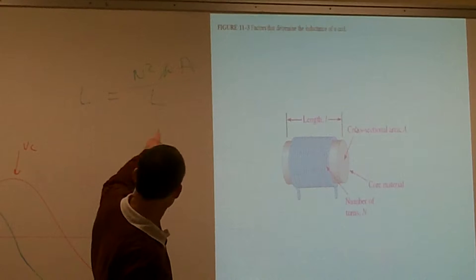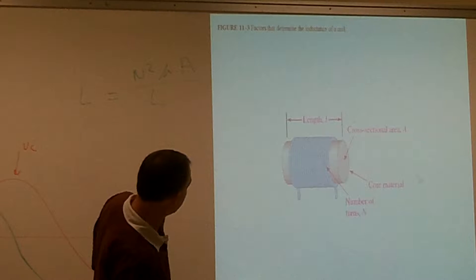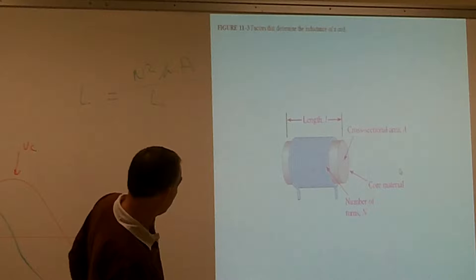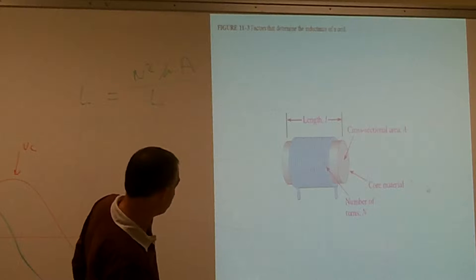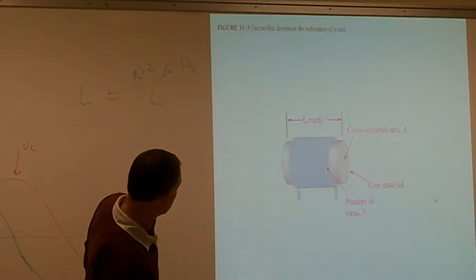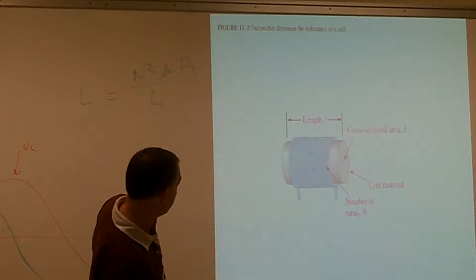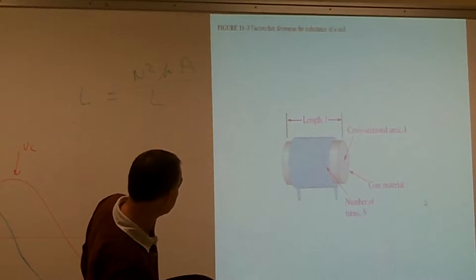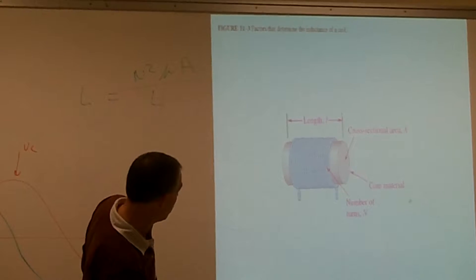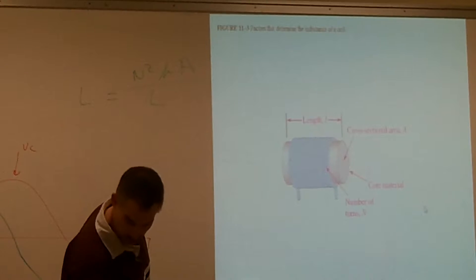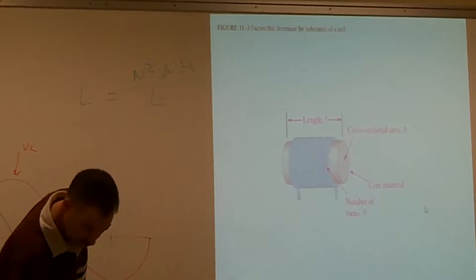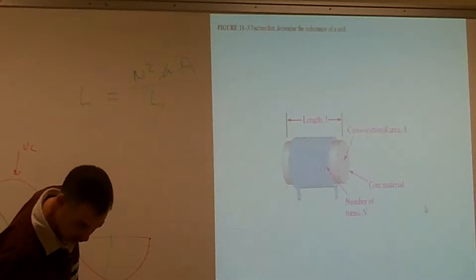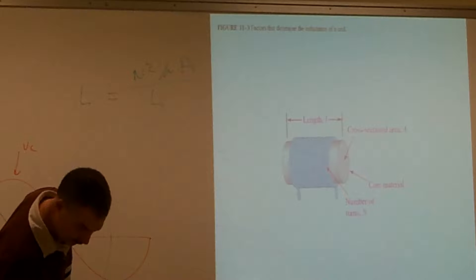Sometimes that formula comes in handy. You won't need it for any of your quizzes or tests - it's just a nice-to-know formula if you did end up having to make one. So how can I increase or decrease my inductor if I wanted to make one particular for a circuit?